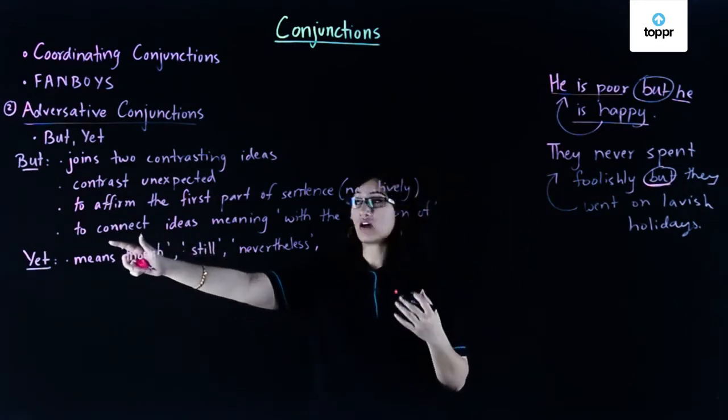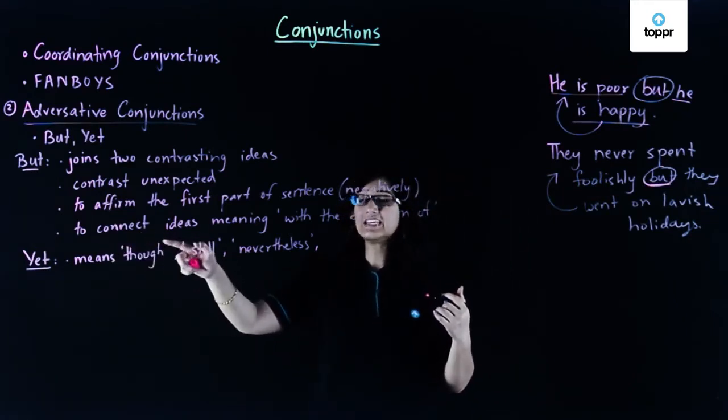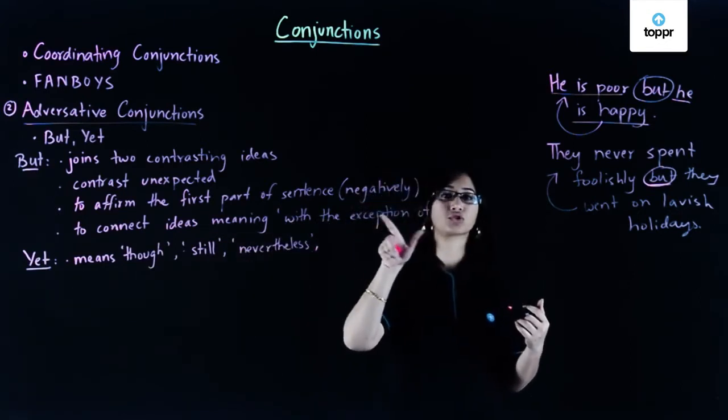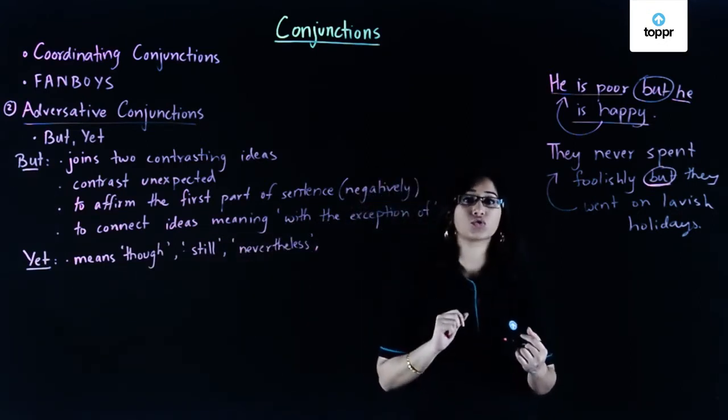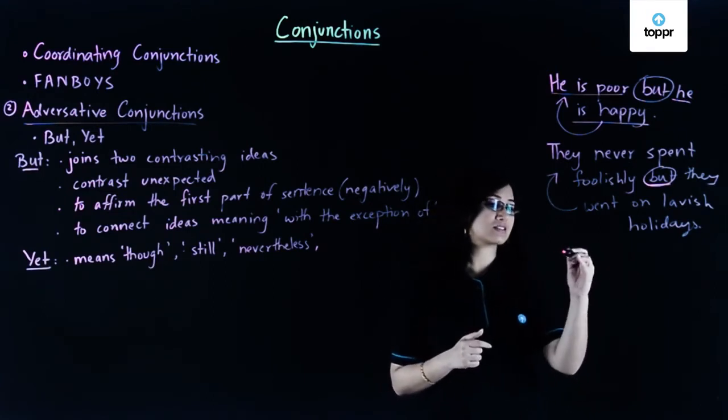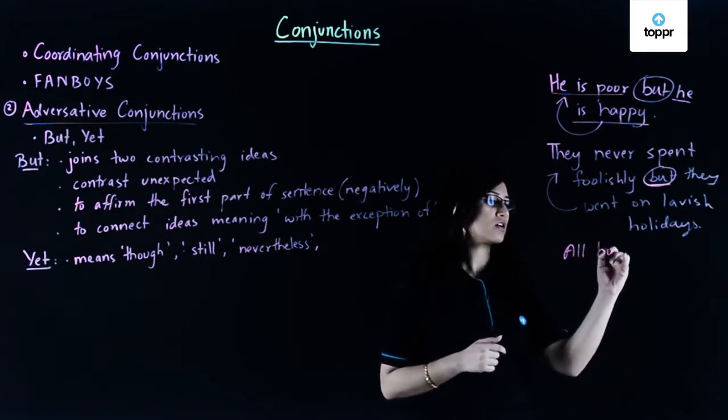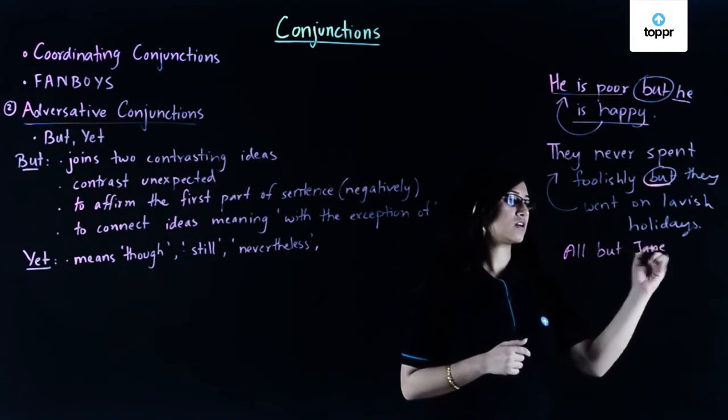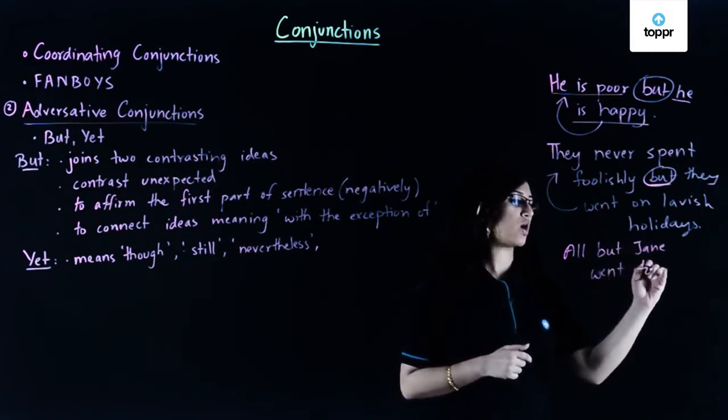Now let's see how we use it otherwise to connect ideas—meaning with the exception of. But is also used to show exception. So if I use a sentence like this: All but Jane went to Goa.